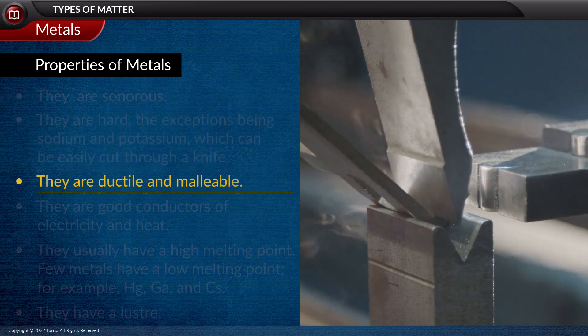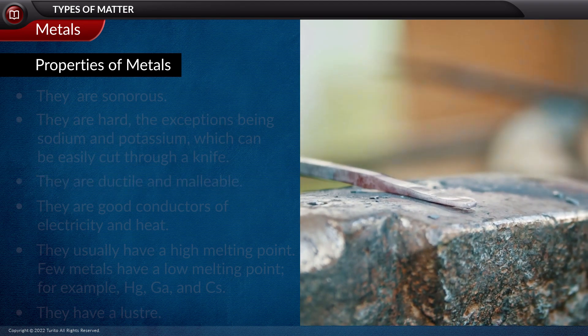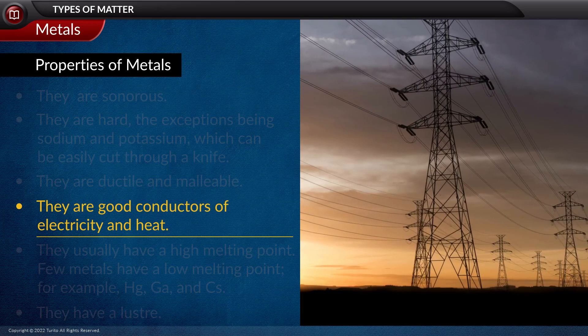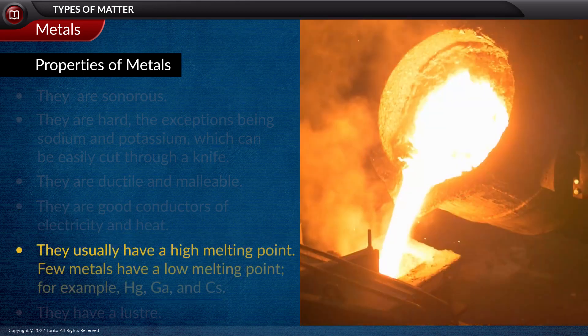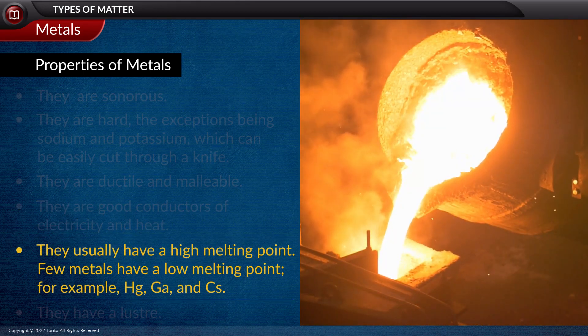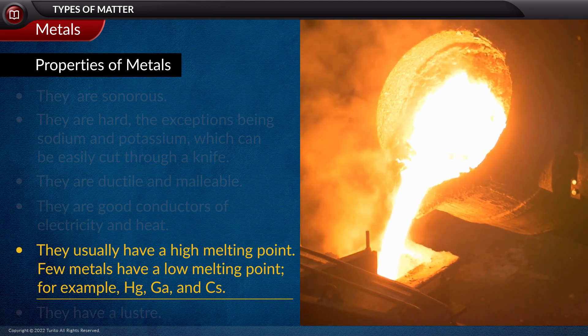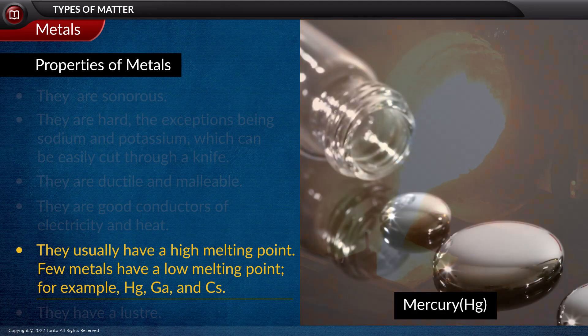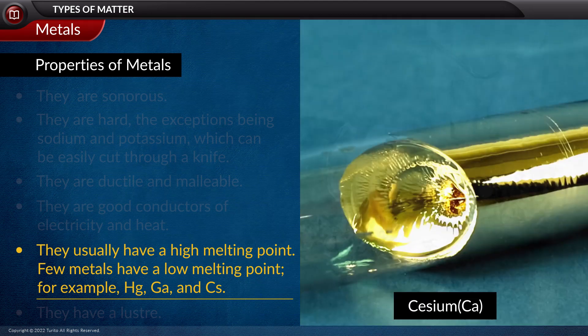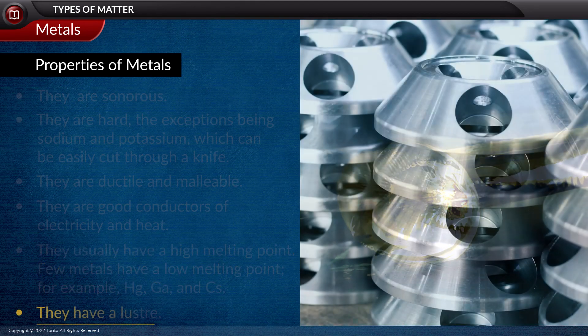They are ductile and malleable. They are good conductors of electricity and heat. Next, they usually have a high melting point, but few metals have a low melting point, for example, mercury, gallium, and cesium. Then they have a luster.